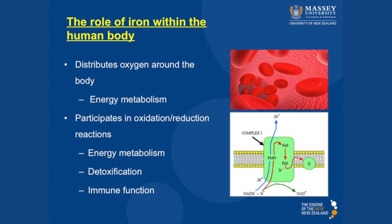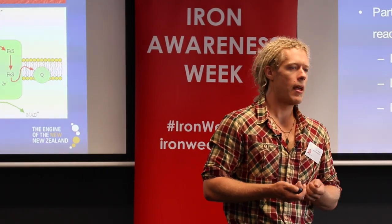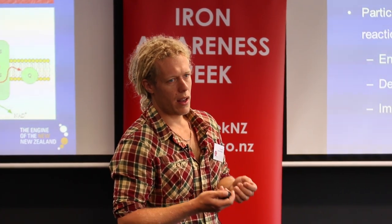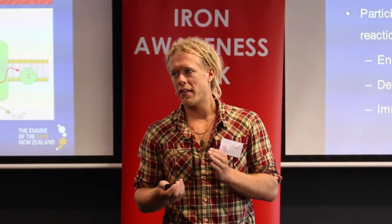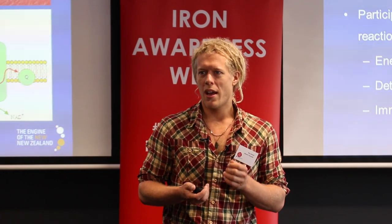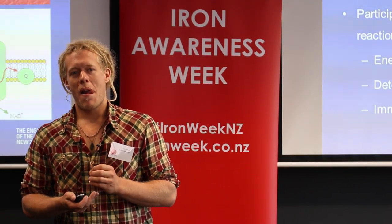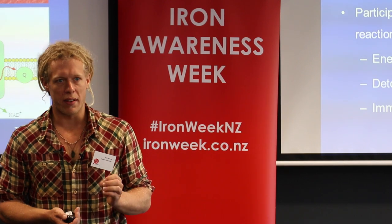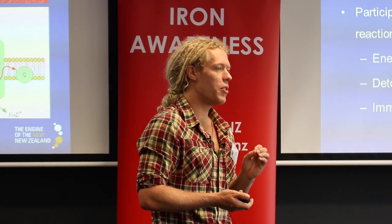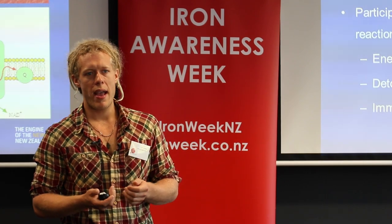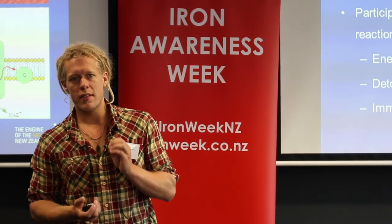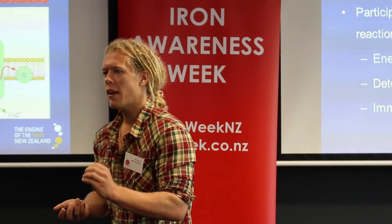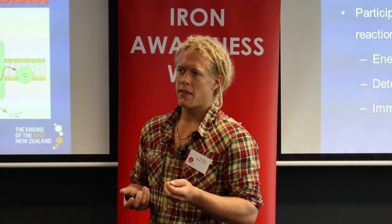Iron is also involved — because of its ability to accept and donate electrons — in other processes, such as detoxifying certain harmful substances and also in immune function. Iron, again because of its ability to be oxidised or reduced, is also potentially risky. It can increase the amount of free radicals that we produce, and that can cause free radical damage or oxidative damage. Our immune system can use this to its advantage — it can make free radicals under controlled conditions and use these to kill pathogens. So if you have iron deficiency, your ability to kill pathogens can be compromised.